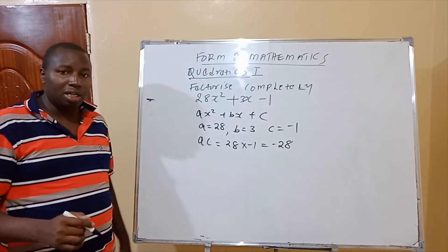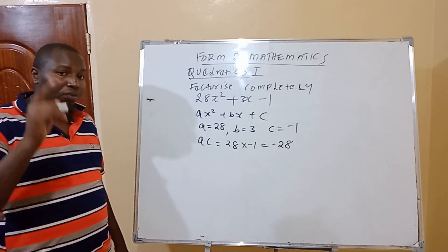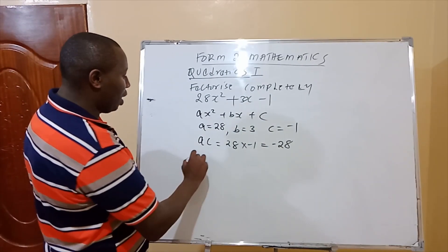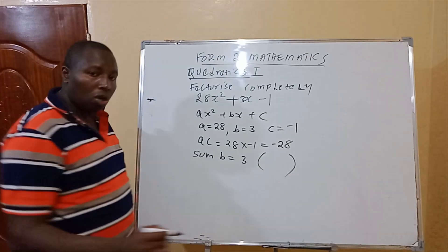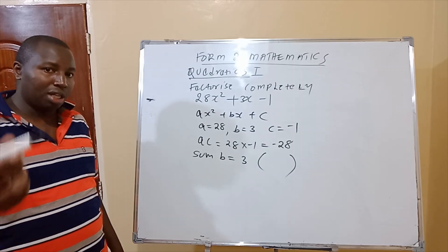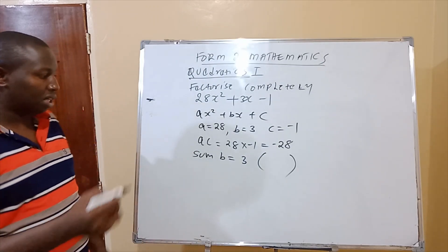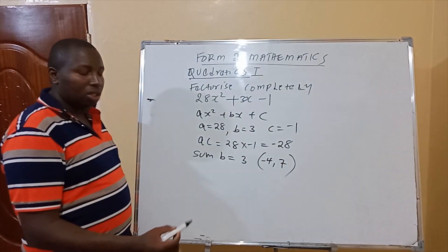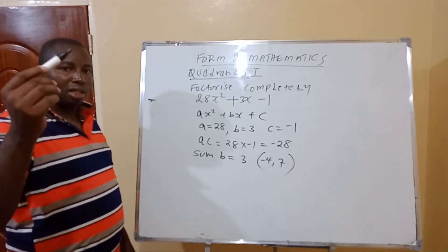So therefore, once you get negative 28, then you are supposed to get the two factors of negative 28, such that when you multiply, you get minus 28, and when you get the sum, it will be equal to the value of b, and our b is 3. So which are these two numbers, or the two factors of negative 28? You multiply, you get negative 28. You get the sum, you get 3. So therefore, these two numbers are negative 4 and 7. So negative 4 times 7, that is negative 28. Negative 4 plus 7, that is 3.